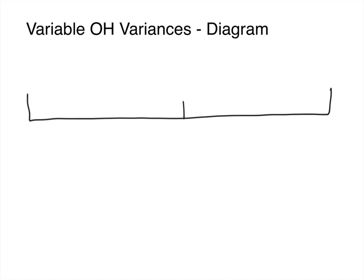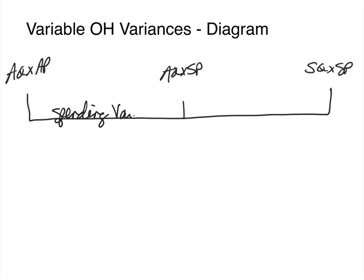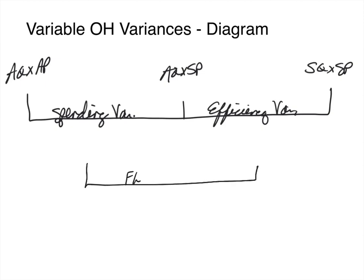As we've always done in the past, we're going to label everything. The first peg is actual quantity times actual price. The second peg is actual quantity times standard price. The third peg is standard quantity times standard price. For variable overhead we have a spending variance and an efficiency variance, and just like with materials and labor we can sum the two variances to get a flexible budget variance.